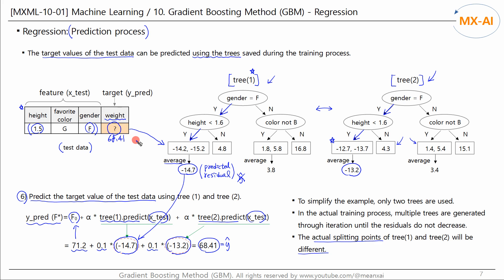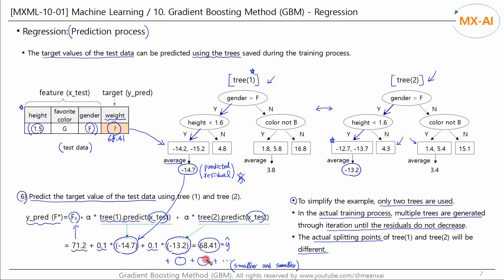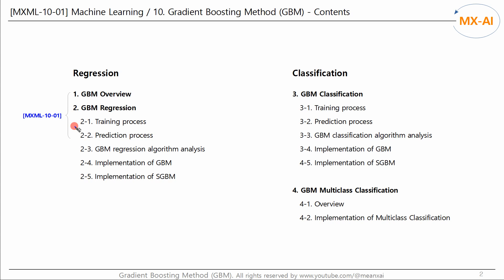To simplify the example, only two trees were used here, but in reality multiple trees are generated during training. Training repeats until residuals no longer decrease, and these values continue to be added, though the values to be added get smaller and smaller. This is the prediction process of GBM. We have looked at an overview of GBM and the training and prediction process for the regression algorithm. In the next video, we will analyze this algorithm in more detail.